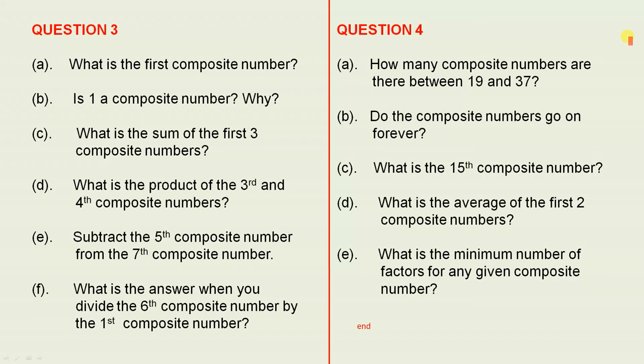And question 4. How many composite numbers are there between 19 and 37? Do the composite numbers go on forever?